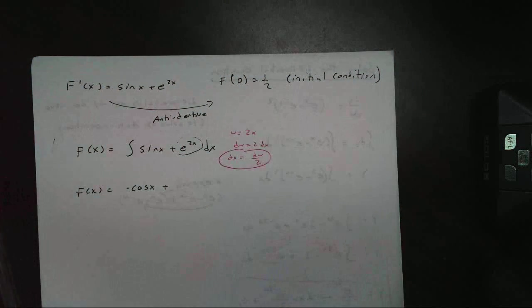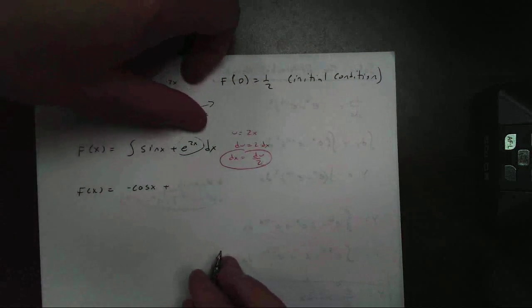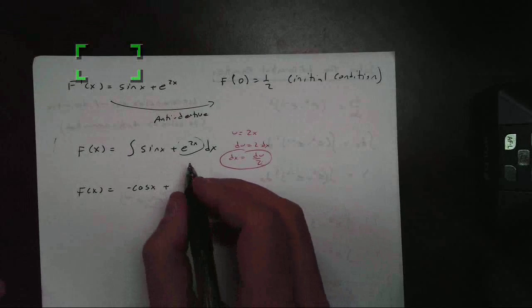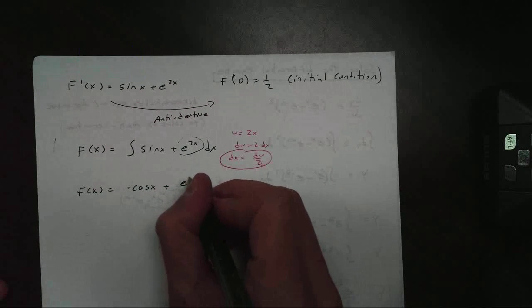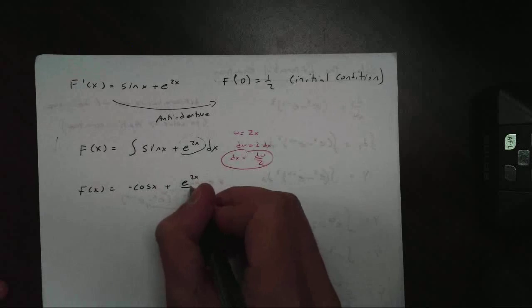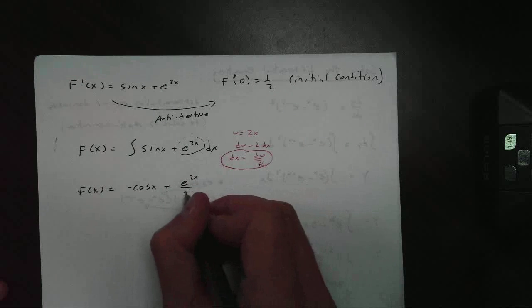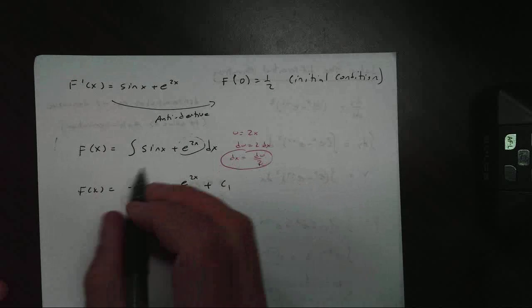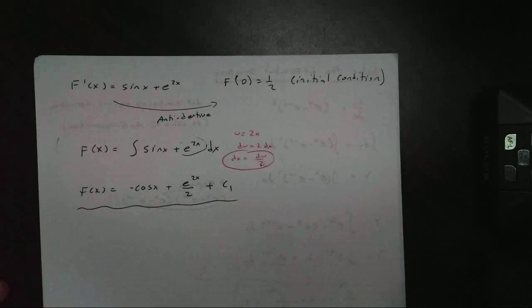And remember, as long as there's no variable there, it's easy breezy. I am going to get my antiderivative, e to the x, which is just e to the 2x this time, but over the 2 right there, plus c1. So there's my antiderivative for now.